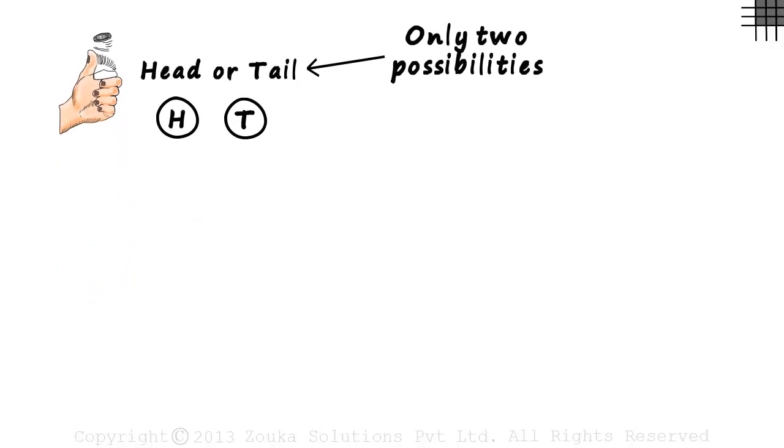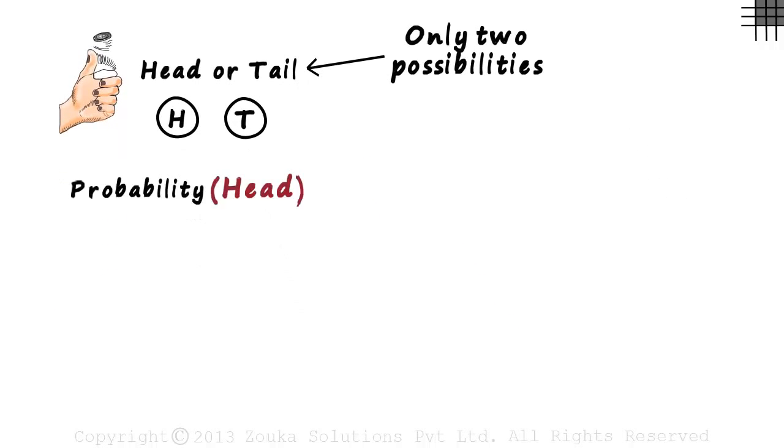Suppose I ask you a simple question. What is the probability of the coin landing a head? This question asks us that if we toss a coin, what is the likelihood that the coin lands a head? How do we calculate it? Here's how.